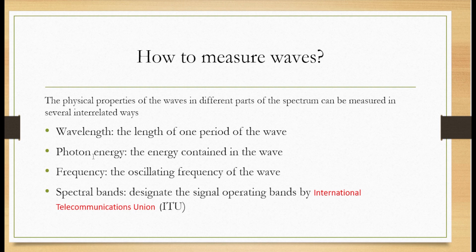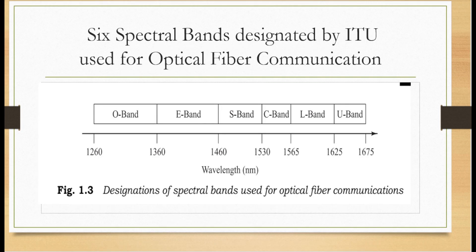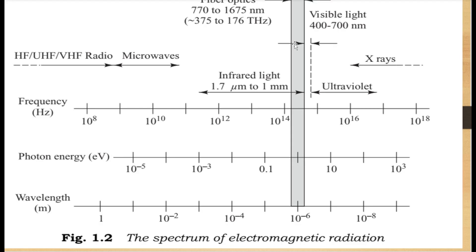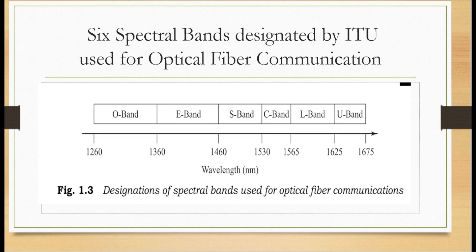These bands are showing the operating signal bands used for fiber optic communication application. If you observe the previous diagram, optical spectrum ranges from about 5 nm in ultraviolet region to 1 mm for far infrared radiation. In between these limits, 400 to 700 is the visible band. Optical fiber communication uses near infrared spectral bands ranging from nominally 770 to 1675 nm. The International Telecommunication Union, ITU has designated 6 spectral bands for use in optical fiber communication within the 1260 to 1675 nm regions. The figure shows 6 bands.